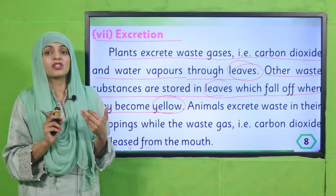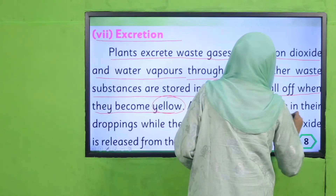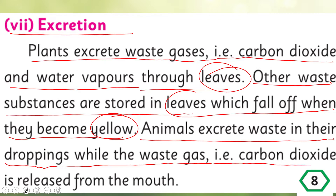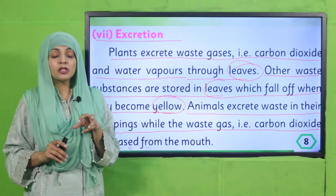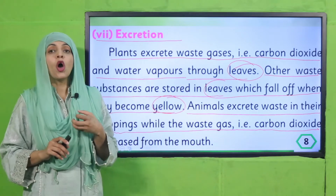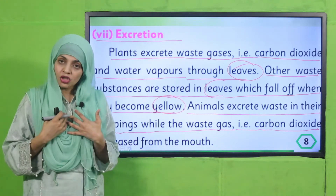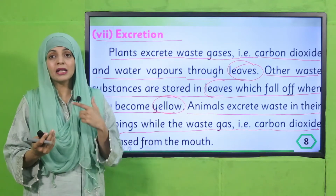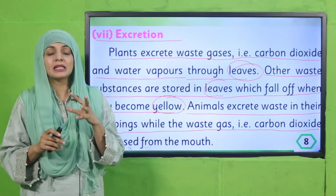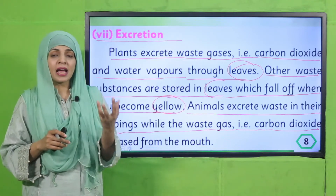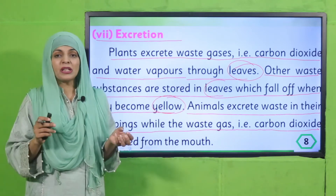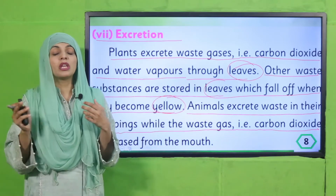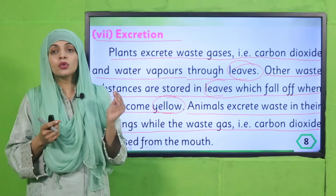Now let's see how animals excrete waste products. Animals excrete waste in their droppings, while the waste gas — carbon dioxide — is released from the mouth. When we breathe in, we take in oxygen, and when we breathe out, that is the waste gas of our body. Similarly, animals breathe out carbon dioxide as waste gas, and their droppings — urination and feces — remove solid waste from their bodies.